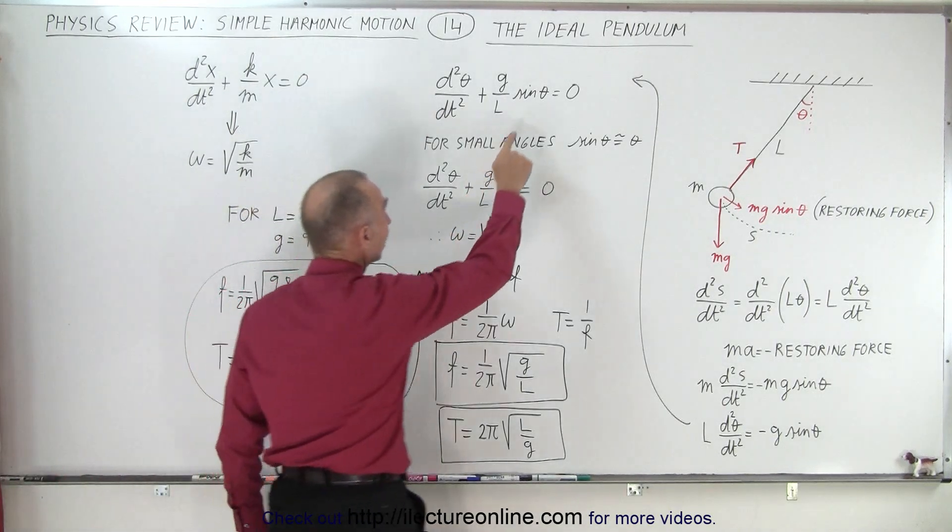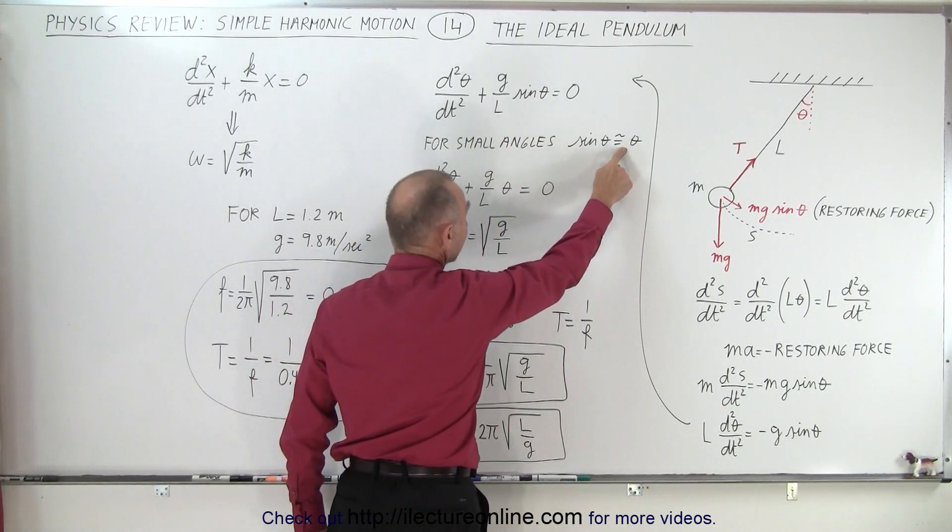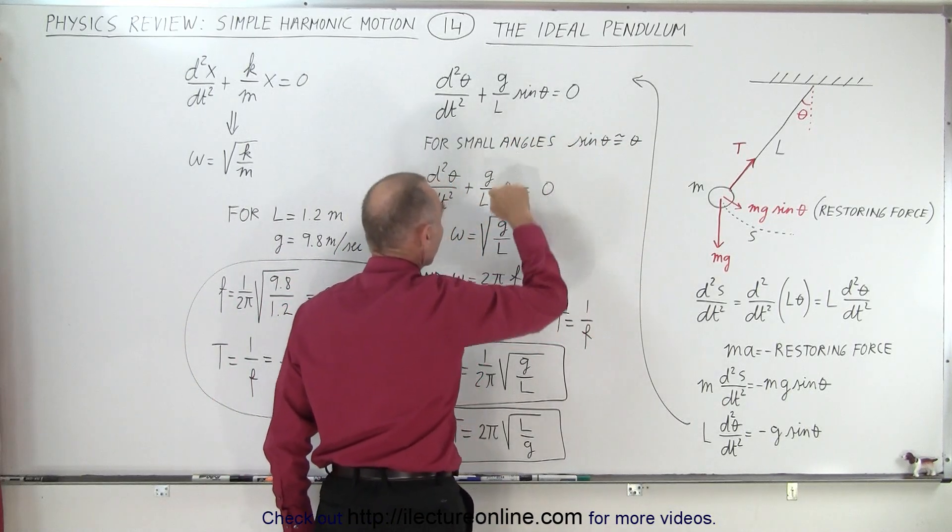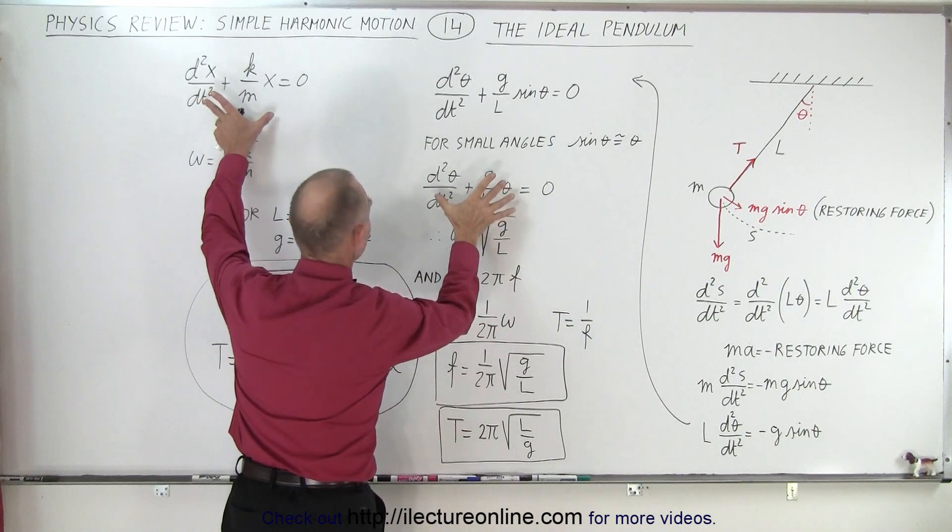Now, for small angles, sine theta equals theta, approximately equals theta. We can replace that, and now the two equations look identical.